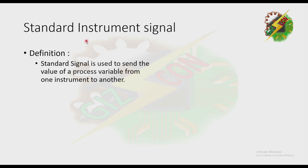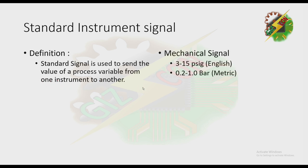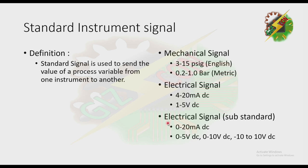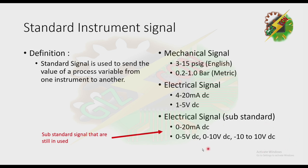Now let's discuss about standard instrument signal. By definition, a standard signal is used to send the value of the process variable from one instrument to another. For standard mechanical signal, we have 3 to 15 PSIG for the English system and 0.2 to 1.0 bar for the metric system. For standard electrical signal, we have 4 to 20 milliampere DC and 1 to 5 volts DC. We also have substandard electrical signals: 0 to 20 milliampere, 0 to 5 volts, 0 to 10 volts, and negative 10 to 10 volts. These are substandard but still used on some instruments.